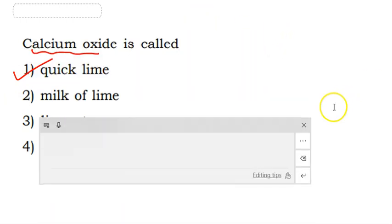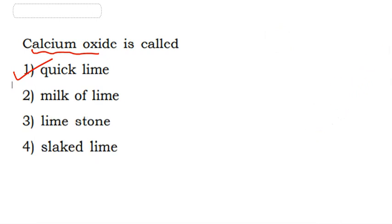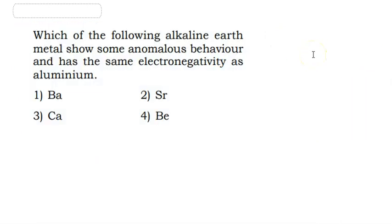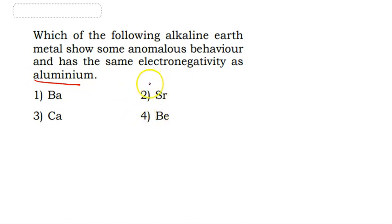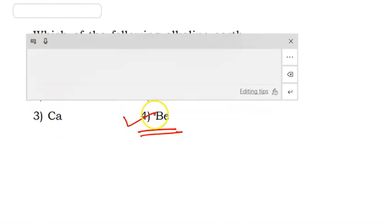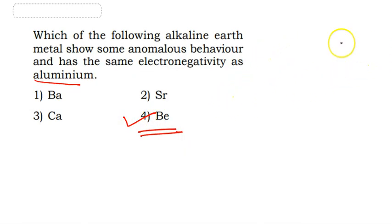Which of the following alkaline earth metals shows some anomalous behavior and has the same electronegativity as aluminum? The answer is Beryllium. Option 4 will be our answer.